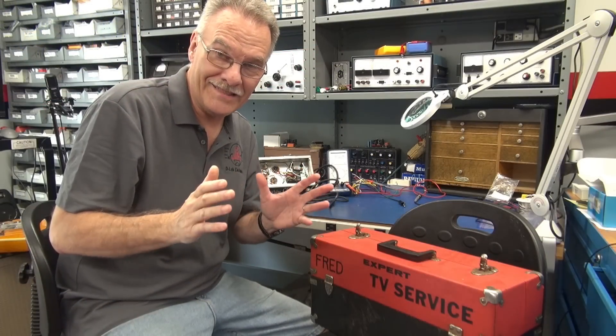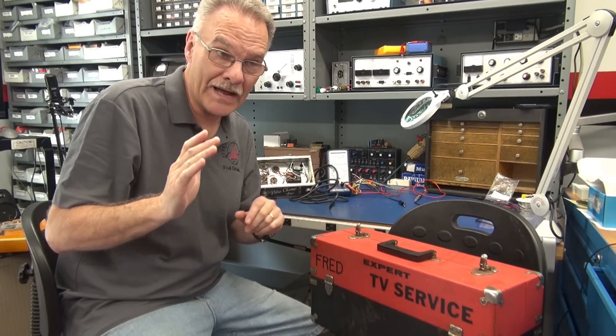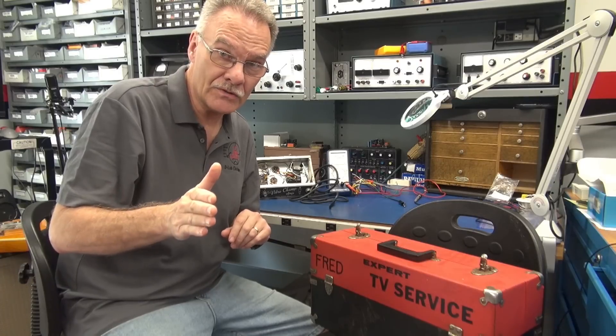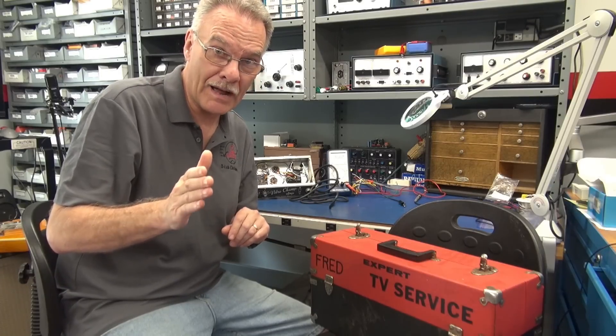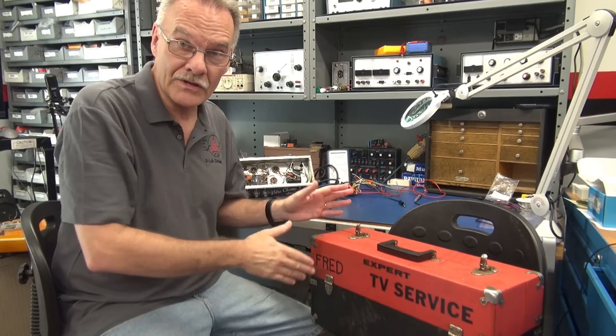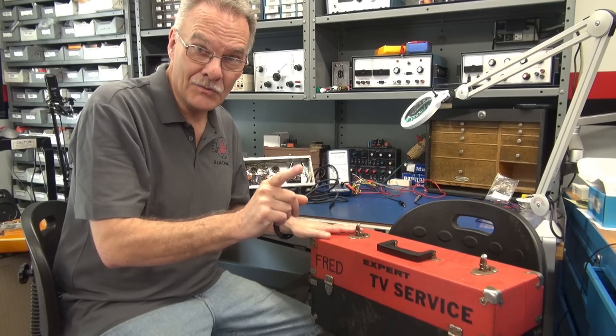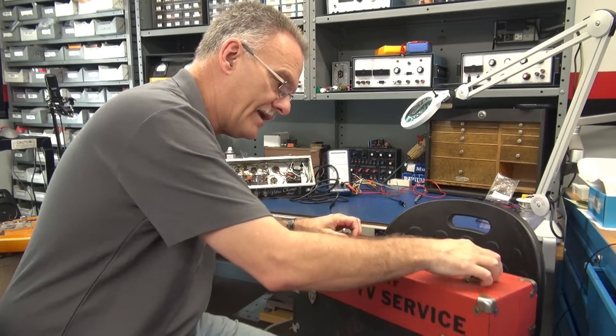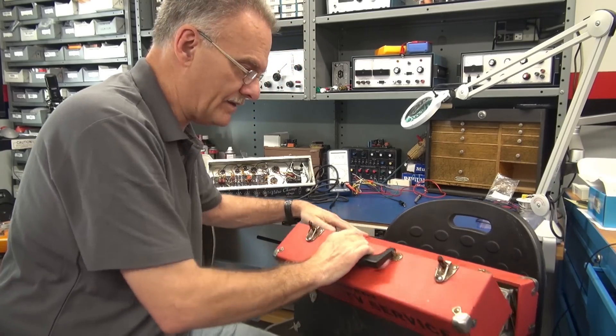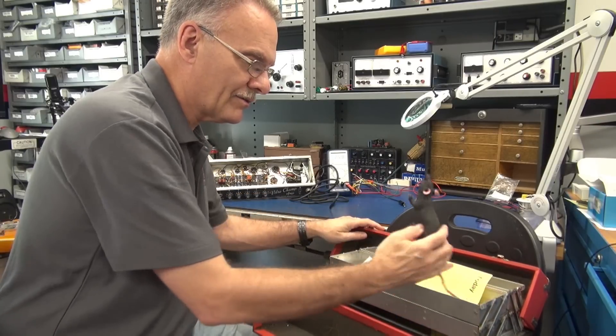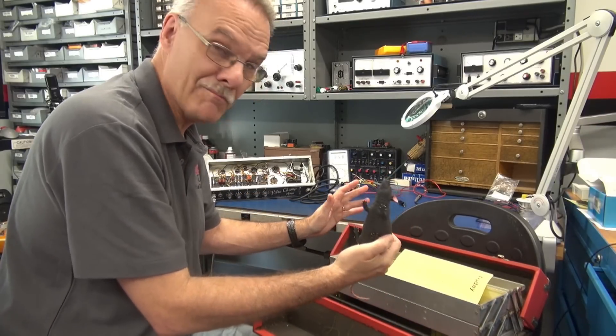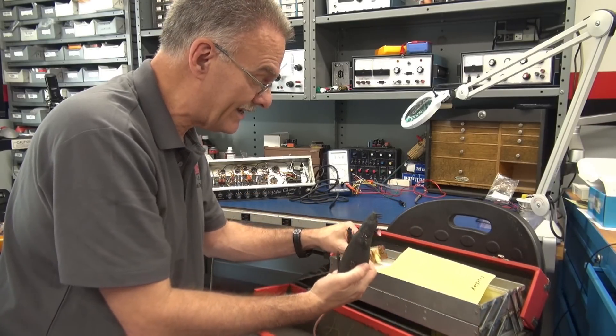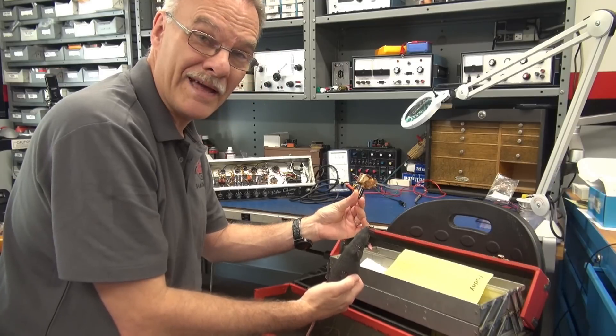Welcome to another D-Labs basic training where I present simple solutions to common tube amplifier problems. Guest star of course is Fred. Let's see what's in the box. So Fred, what do we got today in the magic box? Of course we got Fink, he's always in here messing around something and looks like this time he's got a battery stuck in a brownie.